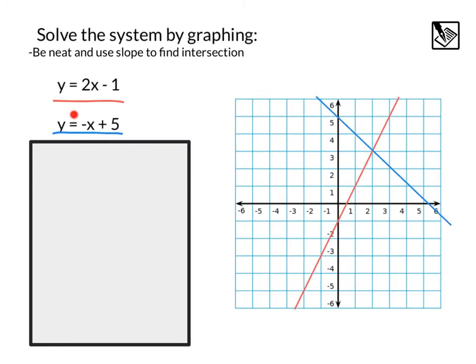For our first line, y equals 2x minus 1, we have a y-intercept at negative 1 and a slope of up 2 over 1. We use that slope repeatedly to find multiple points and get a nice straight line.